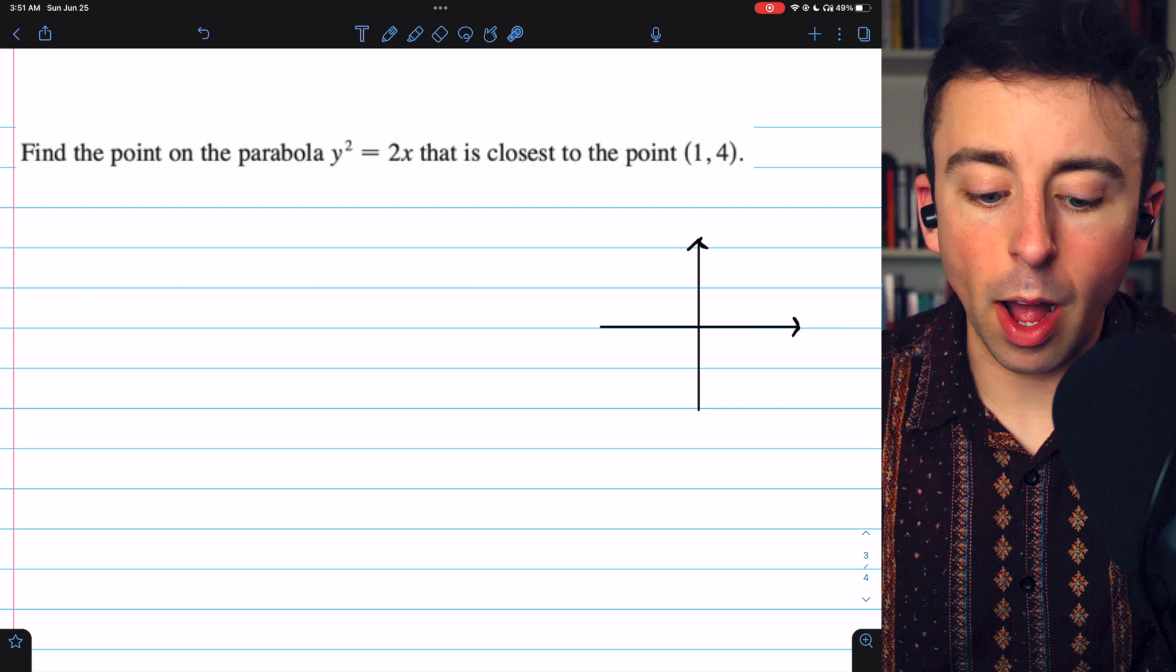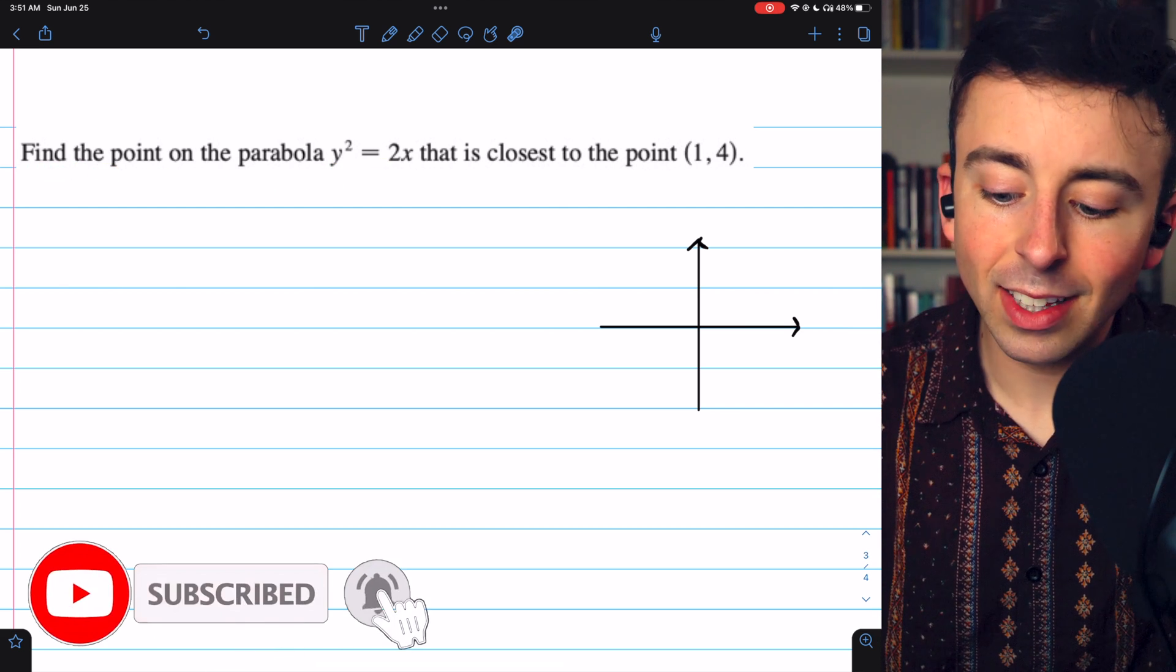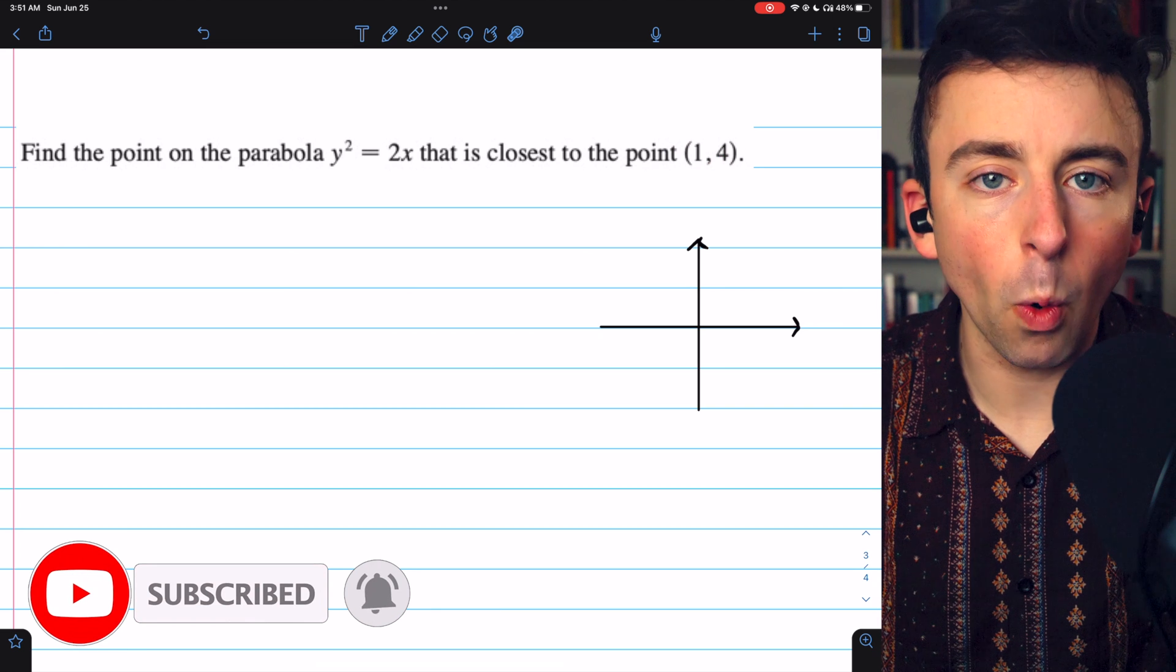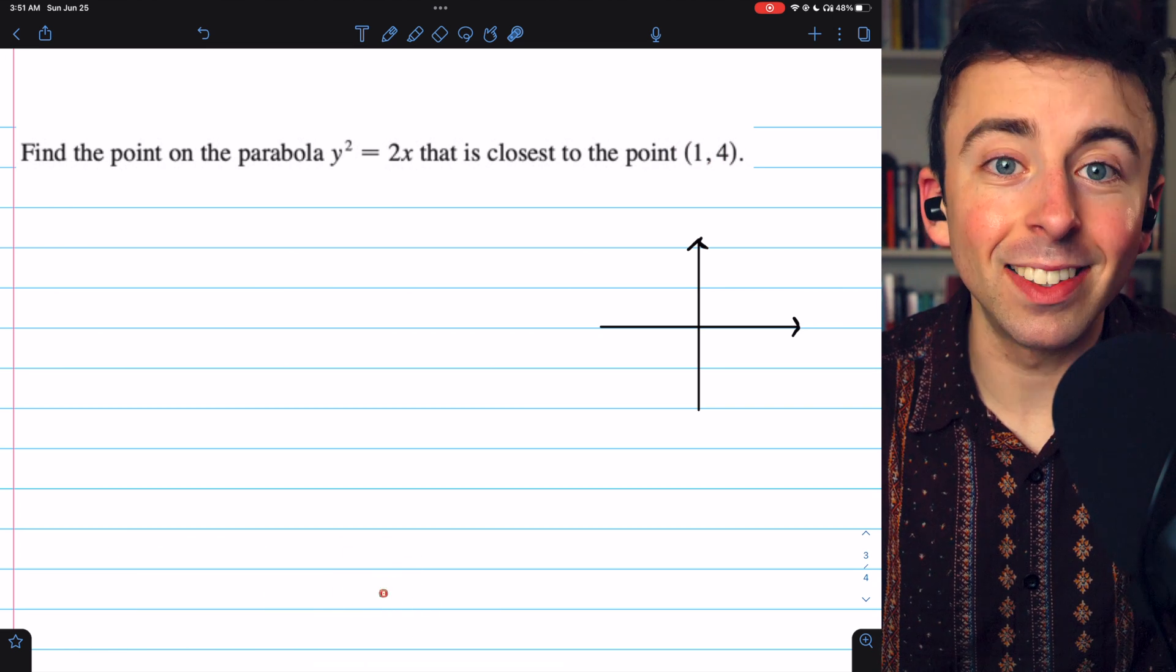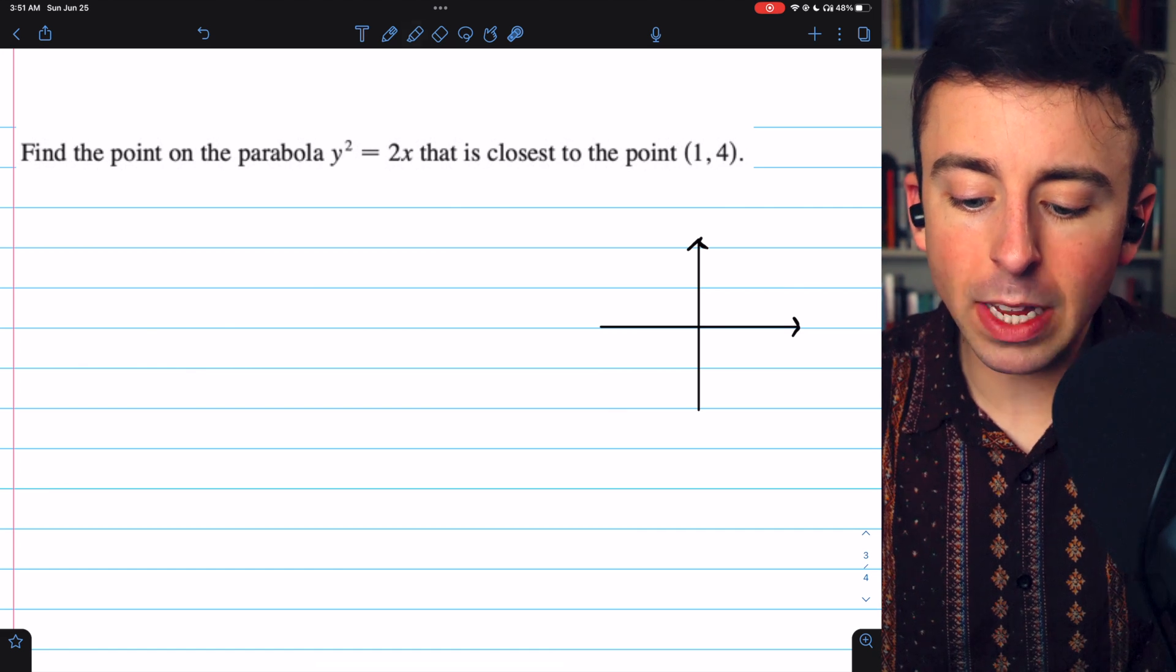Now on to the final and most difficult problem. We want to find the point on the parabola y squared equals 2x that's closest to the point (1,4). So we're trying to minimize distance. Closest, right? We're minimizing distance. Let's begin with a sketch.